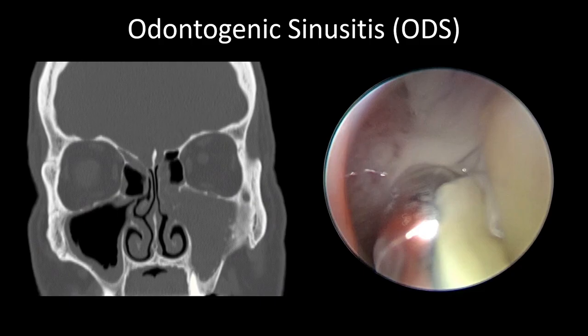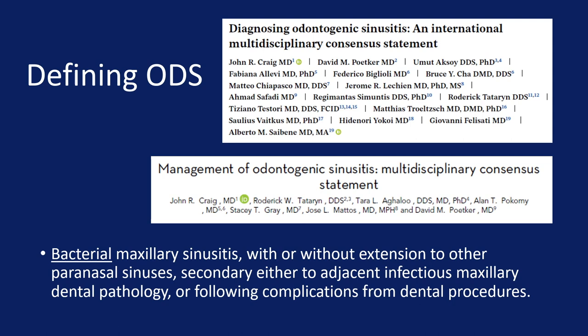So how about we define it? Viewers should be aware that the definition of odontogenic sinusitis has not actually been formally established — it's not present in even recent national or international sinusitis guidelines. After studying various aspects of this condition the last few years, working closely with a fantastic group of researchers from around the world, here's the definition we've come up with, published in two national and international consensus statements: odontogenic sinusitis refers to bacterial maxillary sinusitis, with or without extension to other paranasal sinuses, secondary either to adjacent infectious maxillary dental pathology or following complications from dental procedures.